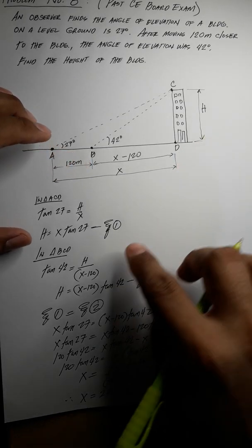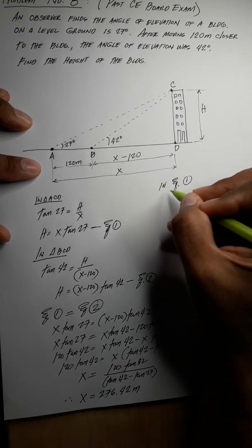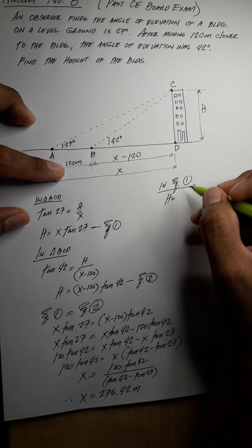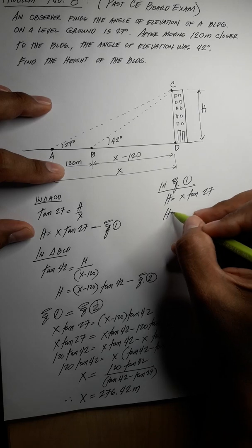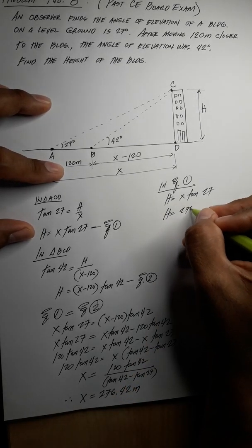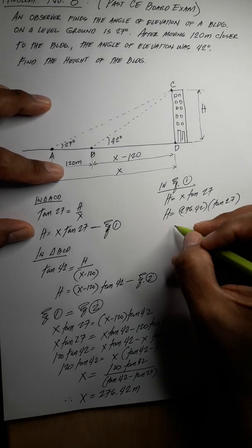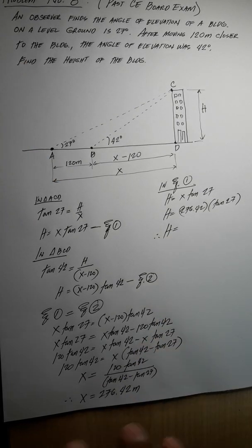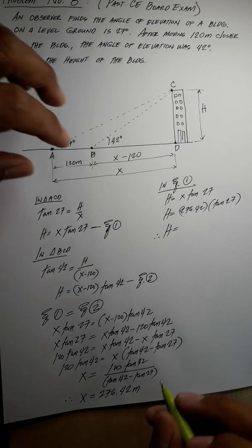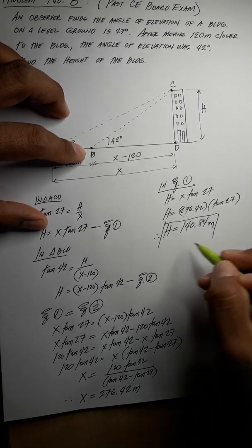Knowing x, we substitute into equation one to solve for h. So h equals x times tangent 27, where x is 276.42 meters. Calculating this gives us the height of the building, which is our final answer.